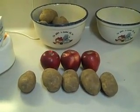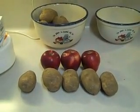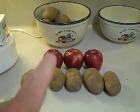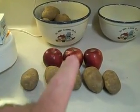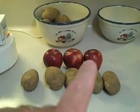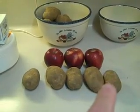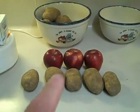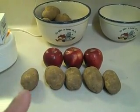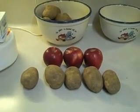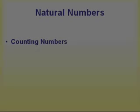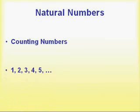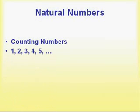If we wanted to count all the pieces of produce on the counter: one, two, three, four, five, six, seven, eight. So these are all the counting numbers — numbers one, two, three, four, five and so on. They go on forever.